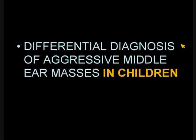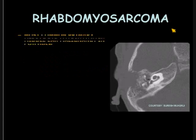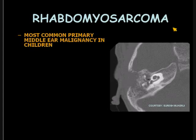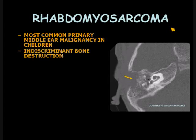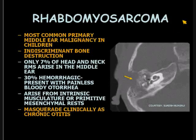Differential diagnosis of aggressive middle ear masses in children — this is brief. First, we have rhabdomyosarcoma. This is the most common primary middle ear malignancy in children. It is characterized by indiscriminate bone destruction, which would be atypical for cholesteatoma.